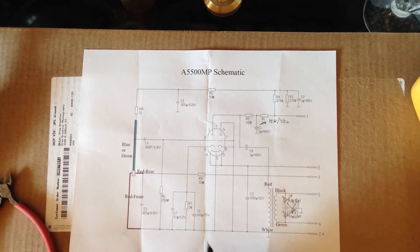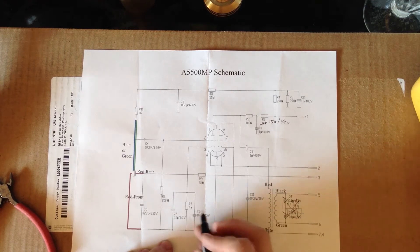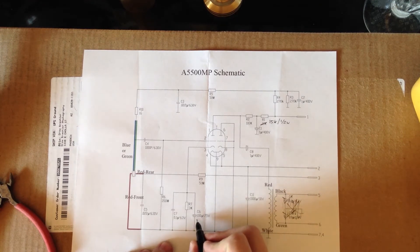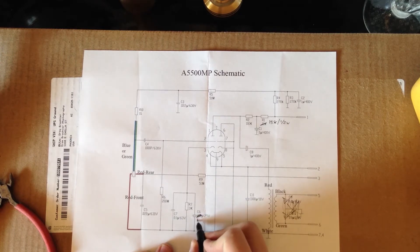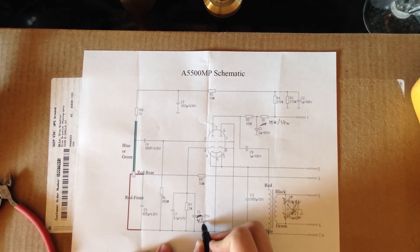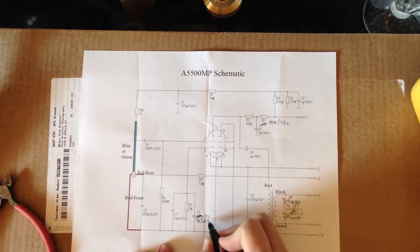We move on to C6, which is right over here. We are changing this. This is 100 microfarad, or UF, and we are changing this to a 47 microfarad at 25 volt.